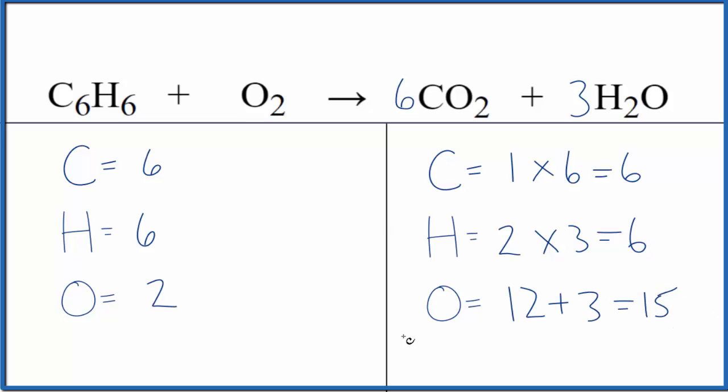The way we solve this is we think two times some number is going to equal fifteen. So we can use a fraction. Two times fifteen over two. The twos cancel out. That would give us fifteen.